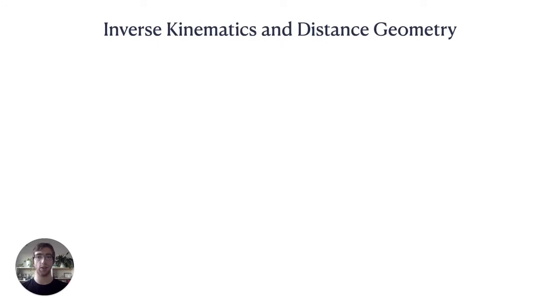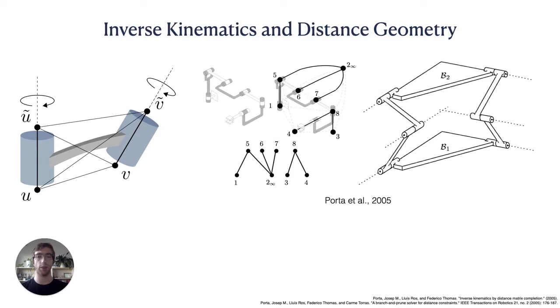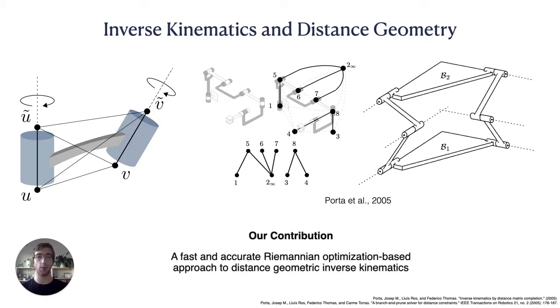To address these challenges, we look to prior work on modeling kinematics with distances between points on a robot that are invariant or bounded under joint actuation. This distance geometric approach has been used in conjunction with algebraic solution methods on a variety of low-dimensional spatial mechanisms. Our work formulates this description of inverse kinematics as a Riemannian optimization problem, allowing us to efficiently and accurately solve problems with many degrees of freedom.